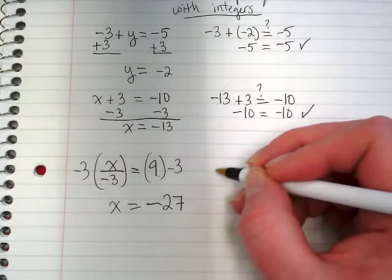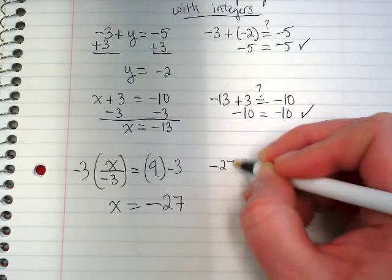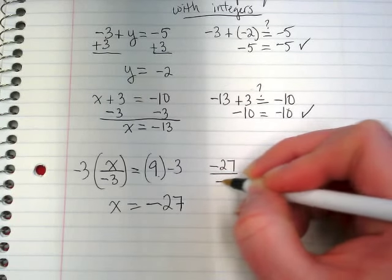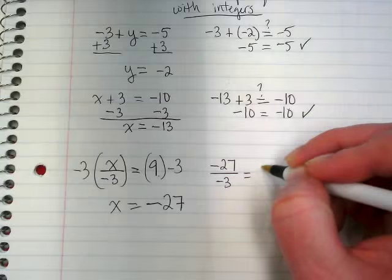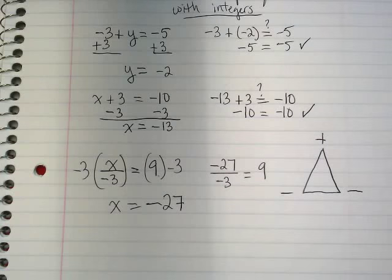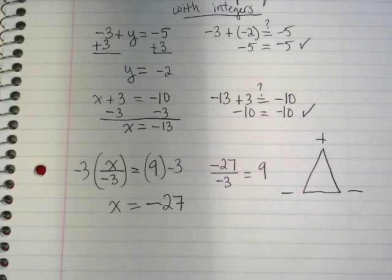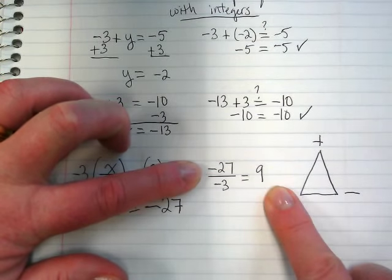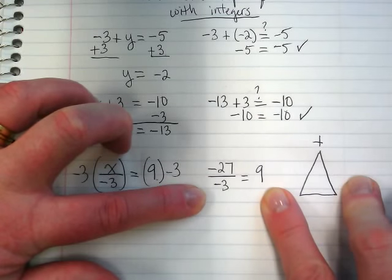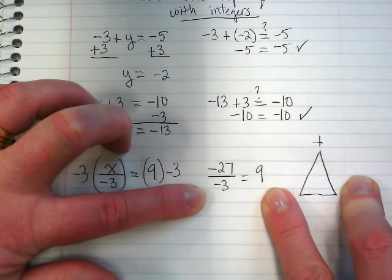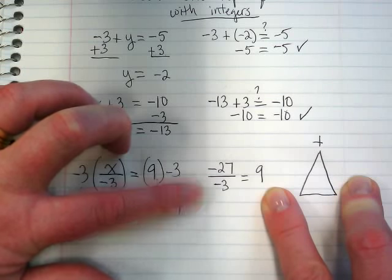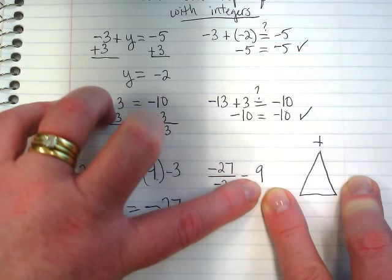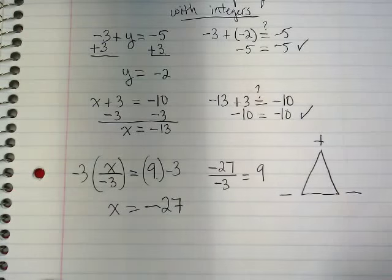We can go back to our original equation and check that. Negative 27 divided by negative 3. Does it equal 9? This is why our triangle can be really helpful, because we can do this again. I have negative 27 divided by negative 3. Is it going to give me a positive number then? And is 27 divided by 3, 9? Then this checks.